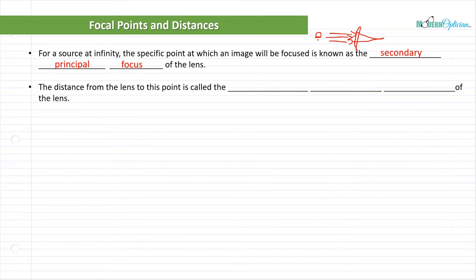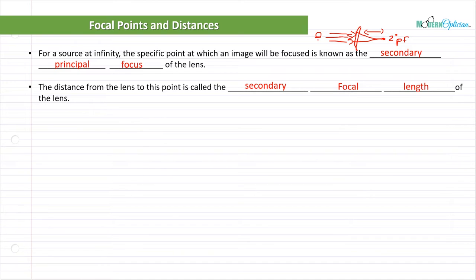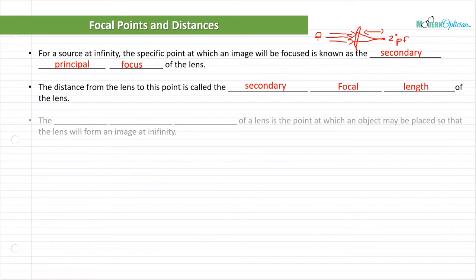The distance from the lens to this point is called the secondary focal length. This point right here is the secondary principal focus — secondary, marked with a little degree symbol. The secondary principal focus, and then this distance between the lens and where it happens is the secondary focal length of the lens. Just little concepts I want you to understand.